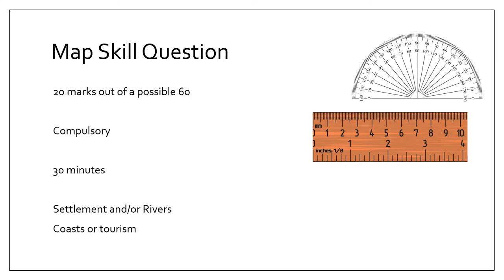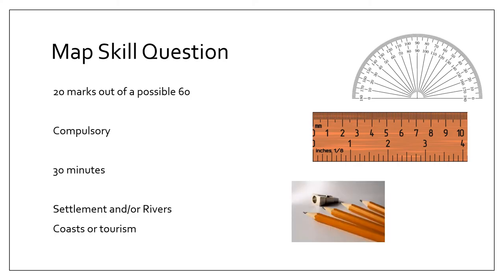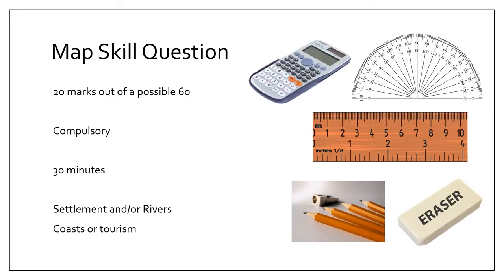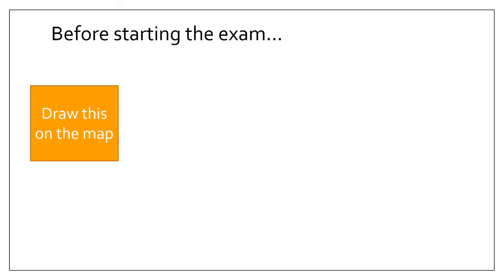The equipment you will need for your exam: a protractor to work out bearings, a ruler for distances and useful for the six-figure reference, a pencil to draw the cross-section and to mark on the map the various figures and lines you might have to refer to, a rubber in case you make a mistake, and a calculator for distances.